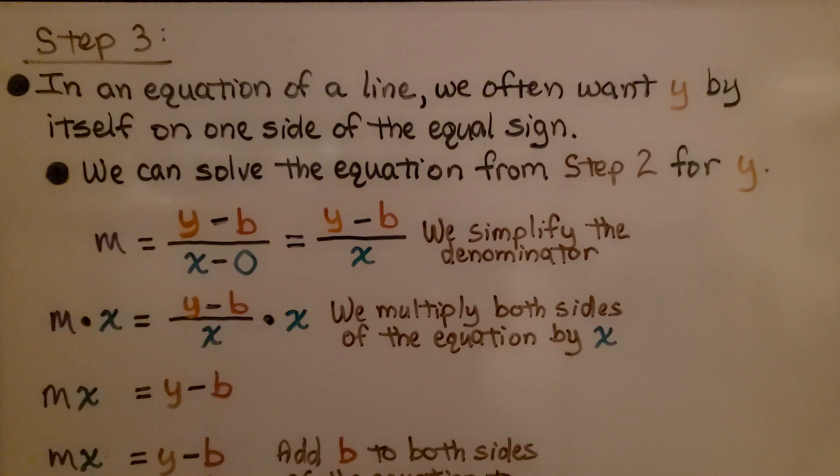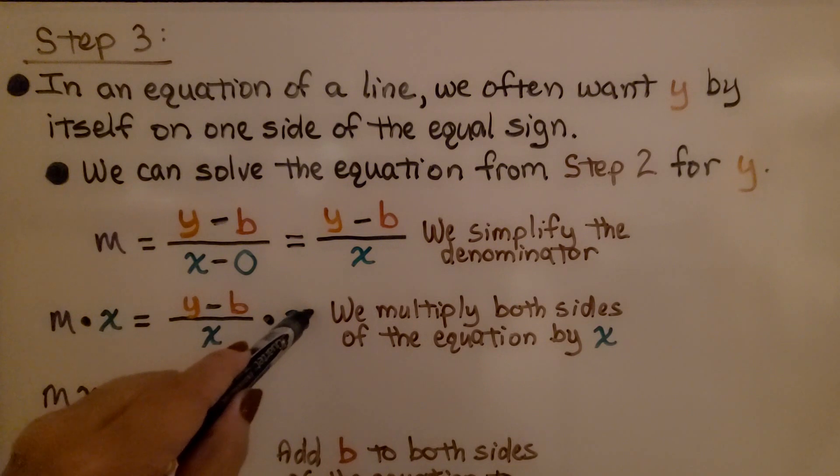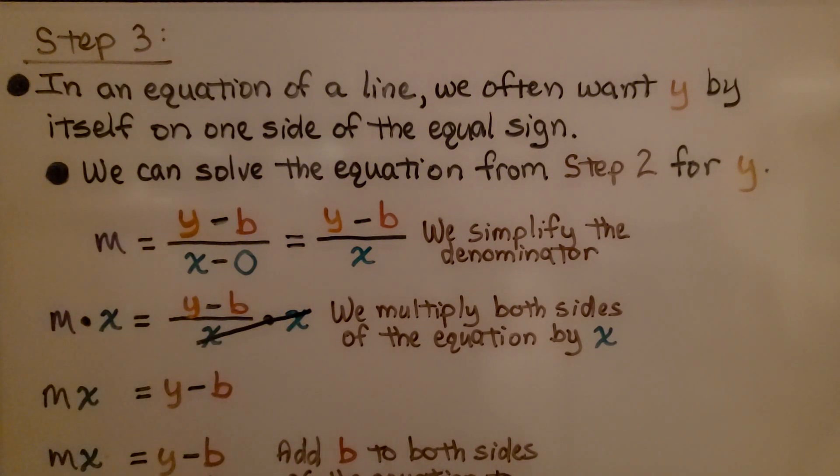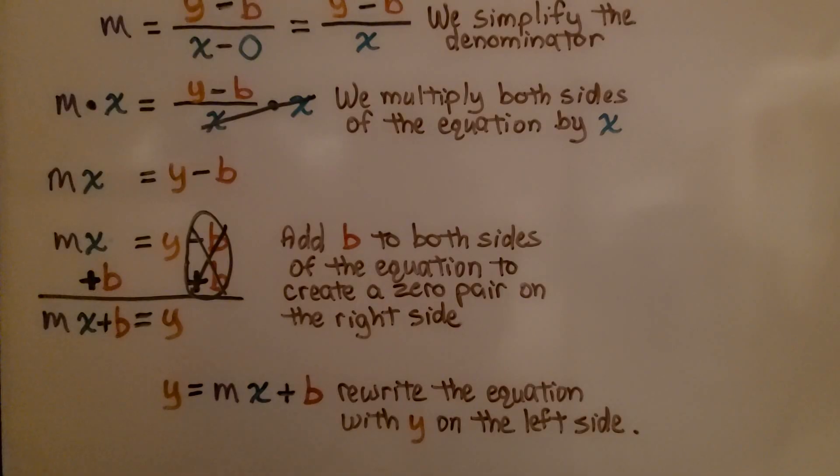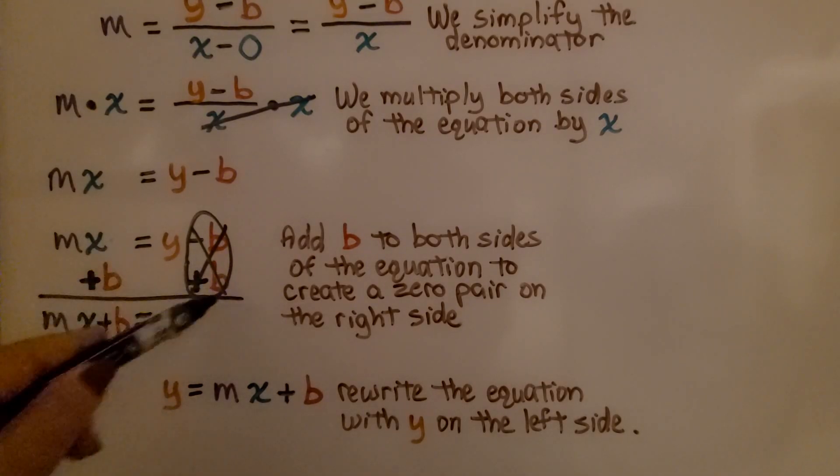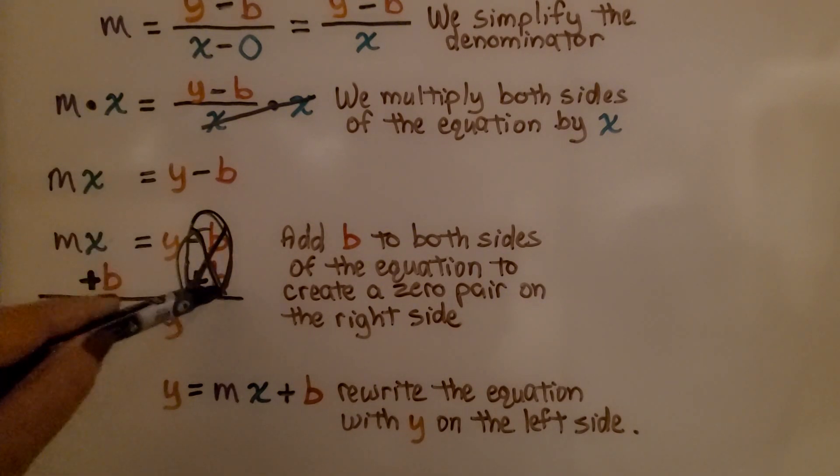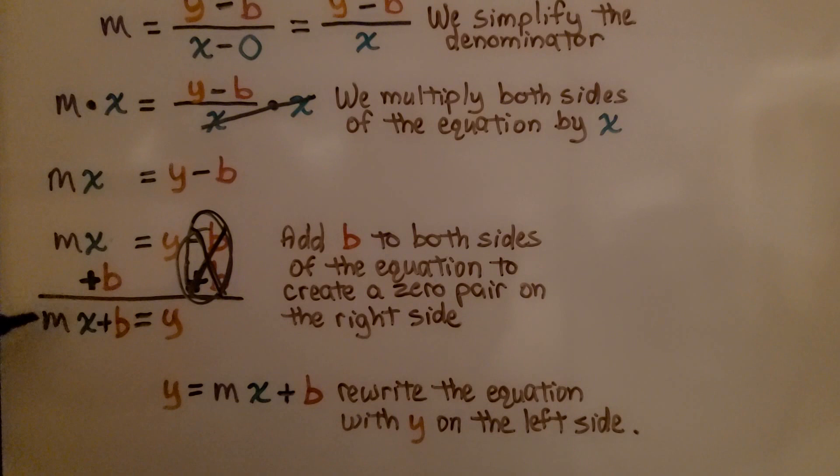Now we multiply both sides of the equation by x. We do times x on this side times x on this side. And what's going to happen is these two x's are going to cancel each other out so that we have m times x on this side is equal to y minus b. Now what we do is we add b to both sides of the equation to create a zero pair here, minus b plus b. On the left side, we get mx plus b, and on the right side, we have y. We rewrite the equation with y on the left side. We have y equals mx plus b, an equation in slope-intercept form.